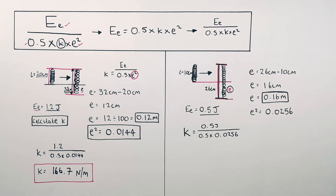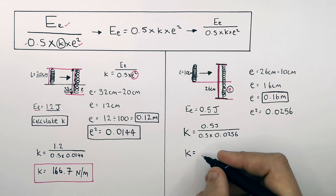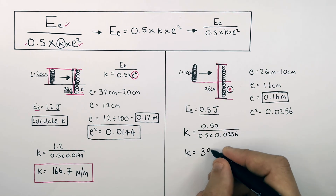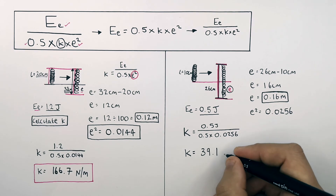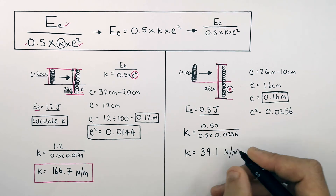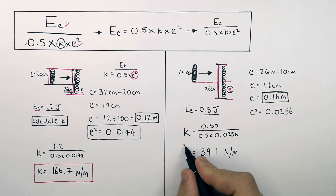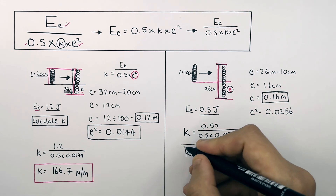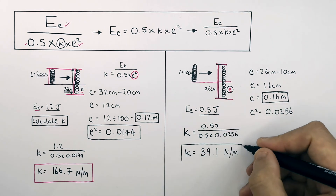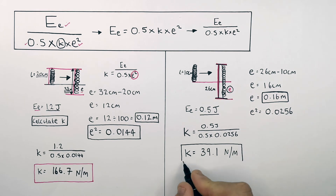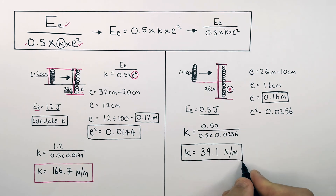k equals 39.1 newtons per metre. So the spring constant for this spring is 39.1 newtons per metre.